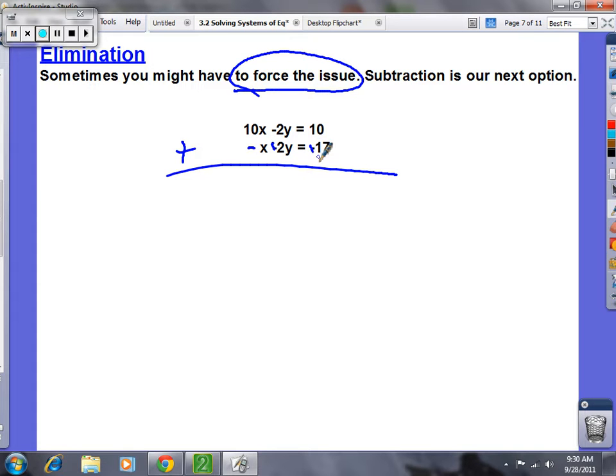So now what's 10x minus x? 9x. Plus your y's cancel. What's 10 plus 17? 27. If 9x is 27, what's x? X is 3.